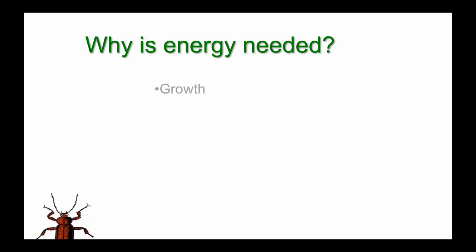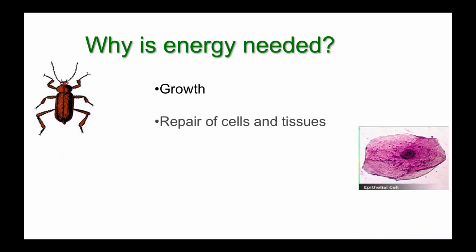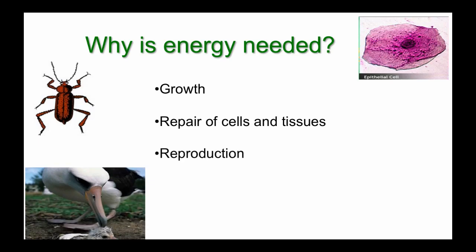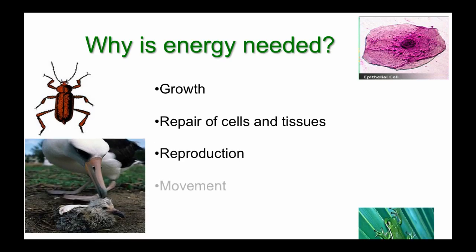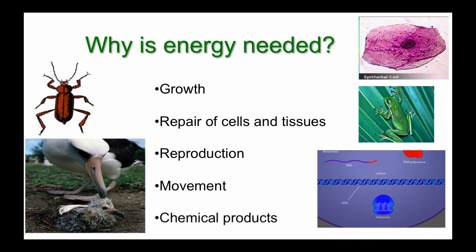Why is energy needed? All organisms need energy for growth, for repair of cells and tissues — all organisms are made of cells and need a lot of energy to repair them and create tissue. All organisms also need energy for reproduction and for movement. Even cells have some type of movement. And organisms need energy to make chemical products; cells are like little chemical factories.